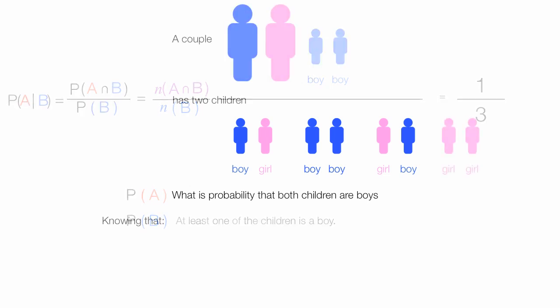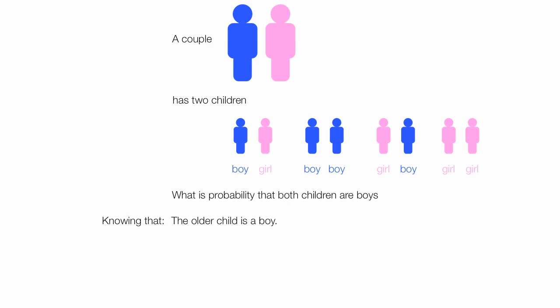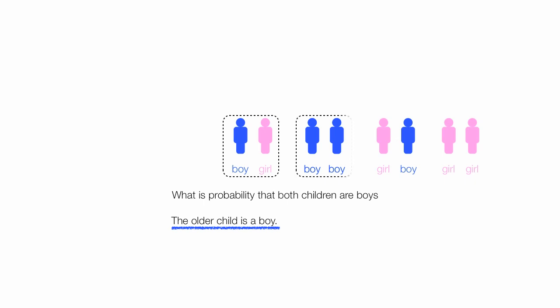Let me change the problem slightly. The new problem: what is the probability that both children are boys knowing that the older child is a boy. In this case my subset is going to be all the cases where the older child is a boy and there's two of those. And in this case there is a set of boys and the subset will pull that out like that.